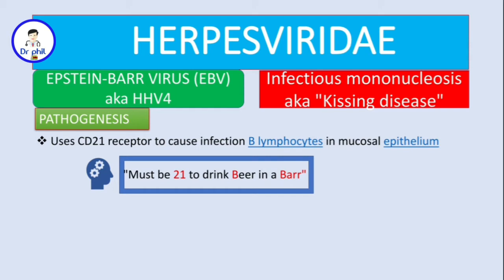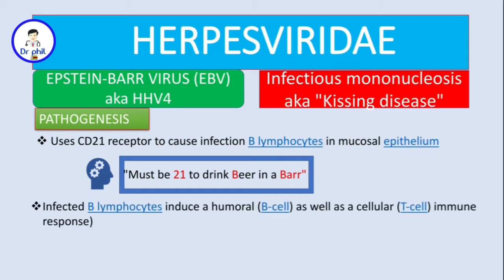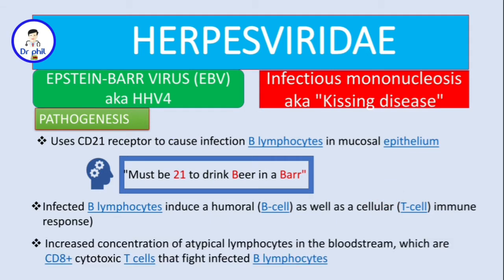After infection, the infected B cells will induce both humoral immunity (B cells) and cellular immunity (T cells). There will be an increased concentration of atypical lymphocytes, also known as Downey cells, in the bloodstream. These cells are CD8-positive cytotoxic T cells that are present to fight the infected B lymphocytes.